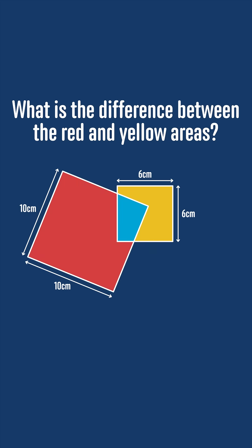The key to this question is to realize that whilst we can't work out the area of the blue region itself, we can still work out the difference between the areas of the red and the yellow regions.